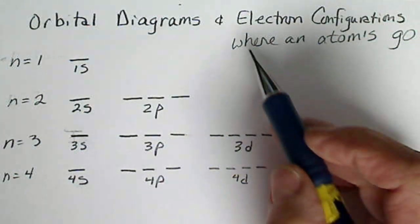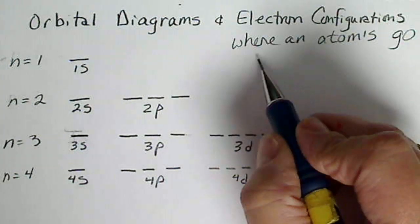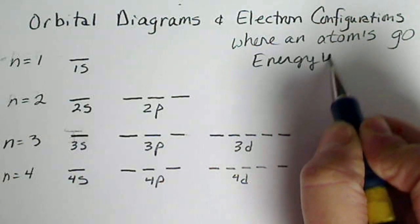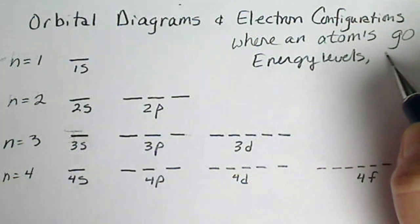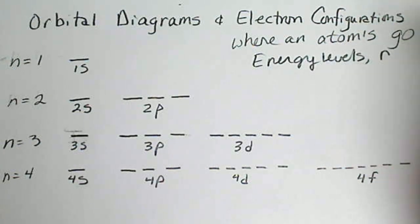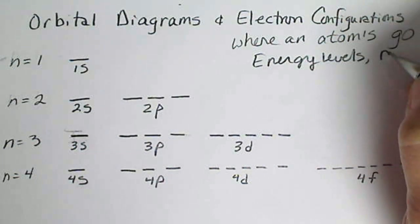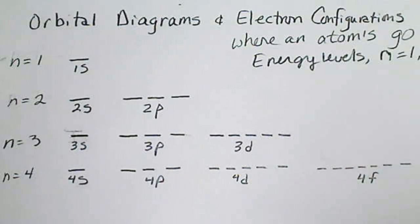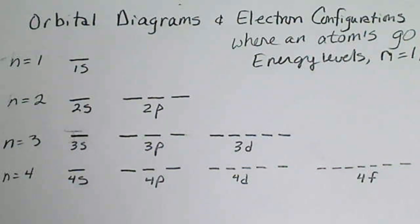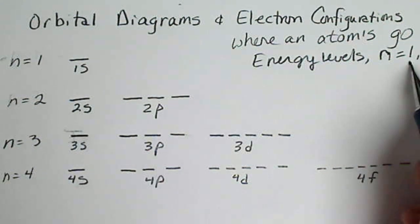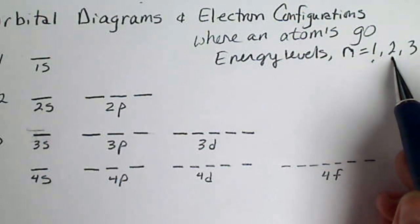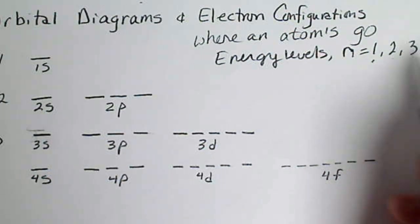When we're building an orbital diagram, we are going to be concerned about energy levels, and remember that is the principal quantum number n, and that starts at 1, and the values increase as counting numbers. n equals 1 is the first energy level, n equals 2 is the second, n equals 3 is the third.